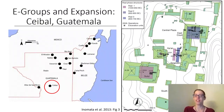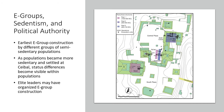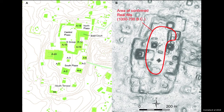Takeshi Inamata and colleagues excavated the E-group at the site of Ceibal in Guatemala. They suggest that the earliest construction in the region at the E-group was actually done by different groups of people who were semi-sedentary — moving around the landscape periodically — who came together to build this earliest stage of the building, beginning around 950 BCE. Over time that population became more sedentary, and as they began to live at Ceibal itself, we also see evidence of people who had more power and wealth than others — elite individuals. Inamata and colleagues suggest that those elite leaders were the ones organizing the construction of those large buildings, showing their political power, and we start to see these sites grow over time.